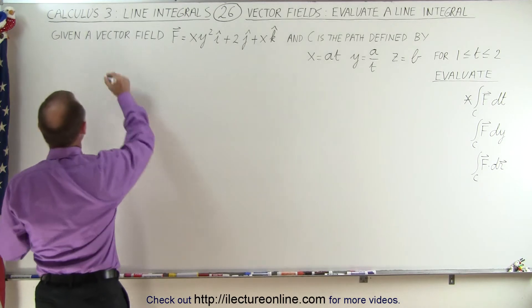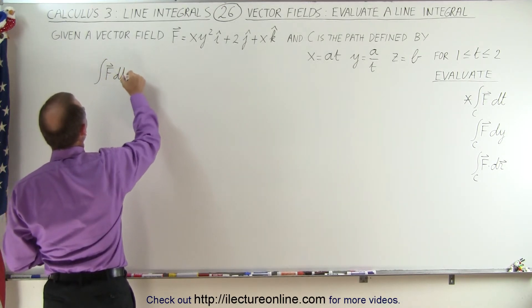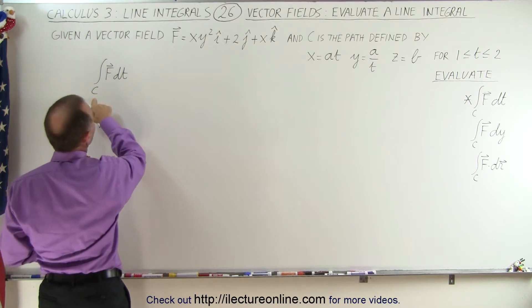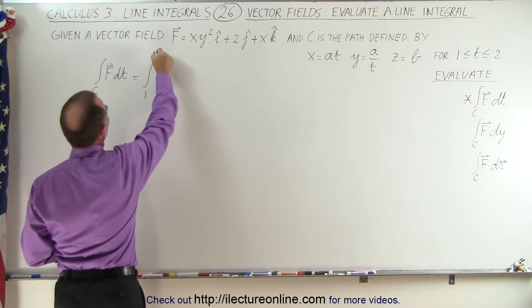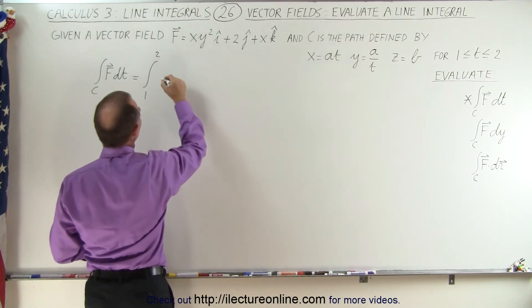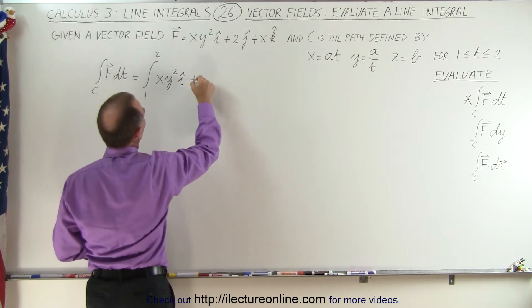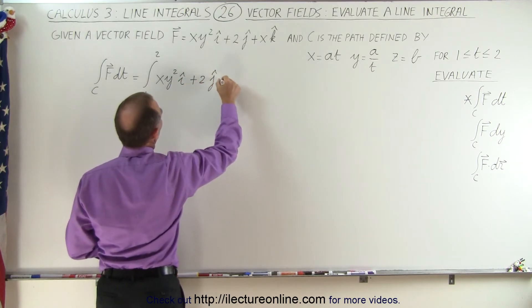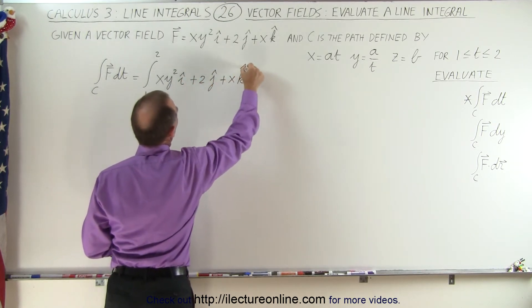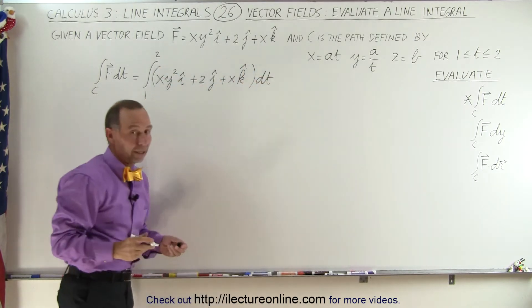So the first one is as follows. The integral of the vector field times dt over the path indicated is going to be equal to the integral from 1 to 2, because we're going to have the variable t of the vector field f, which is xy² in the i direction, plus 2 in the j direction, plus x in the k direction, the whole thing, times dt.